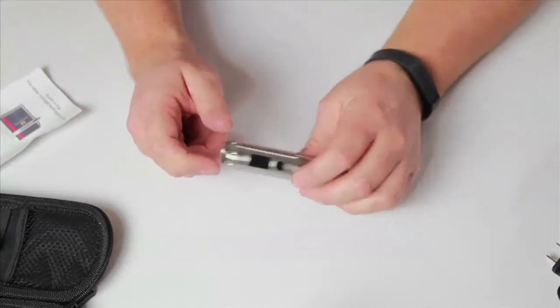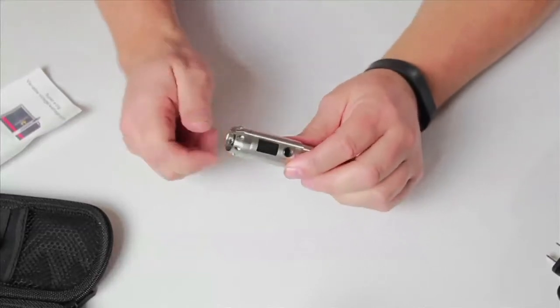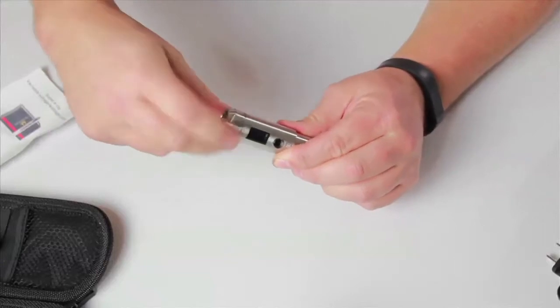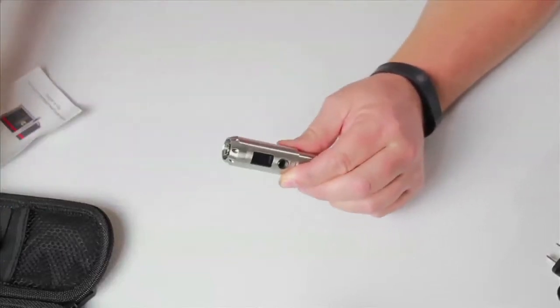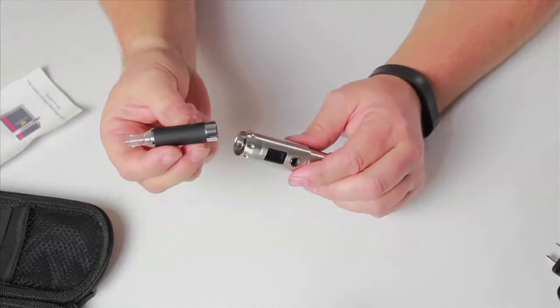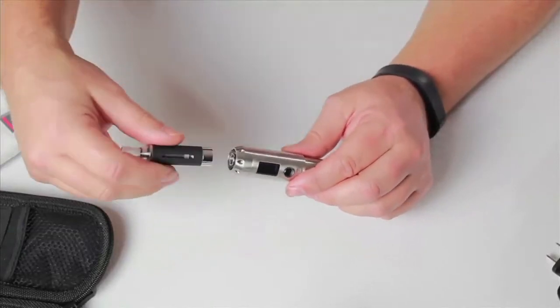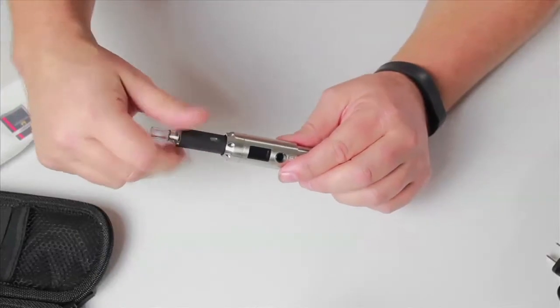When you're using this with your clearomizer, one of the cool things about this is this top cap unscrews. So when you're using an EVOD or similar ego outer threading clearomizer, if you notice, as soon as you put it in, you don't have access to the base.